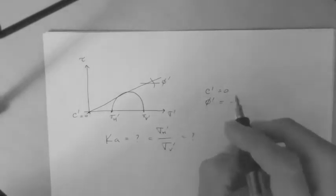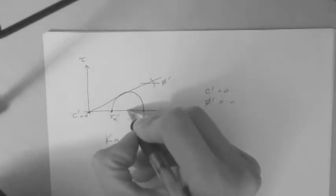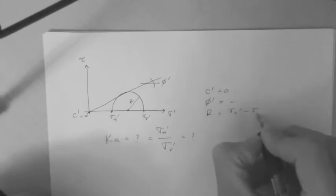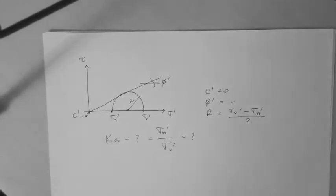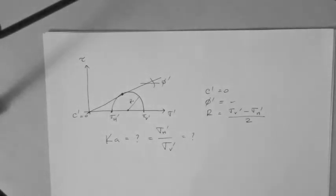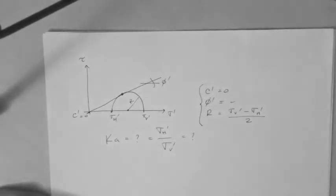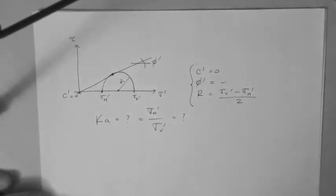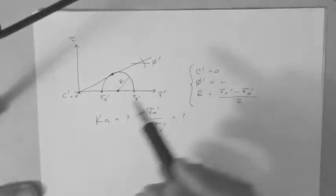We also know that the radius of the circle. The radius of the circle is the vertical minus the horizontal divided by 2, and we know that the Mohr circle touches the envelope at that point. So when we do the geometric analysis, all that is is basically just high school geometry, there's no tricks or anything else.